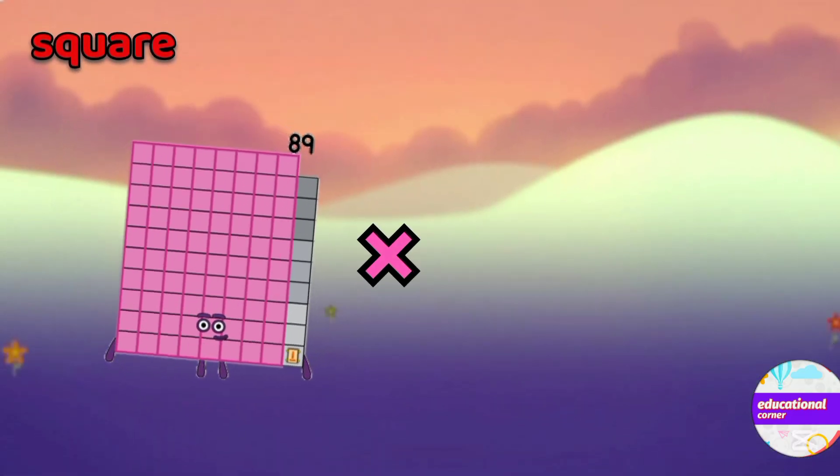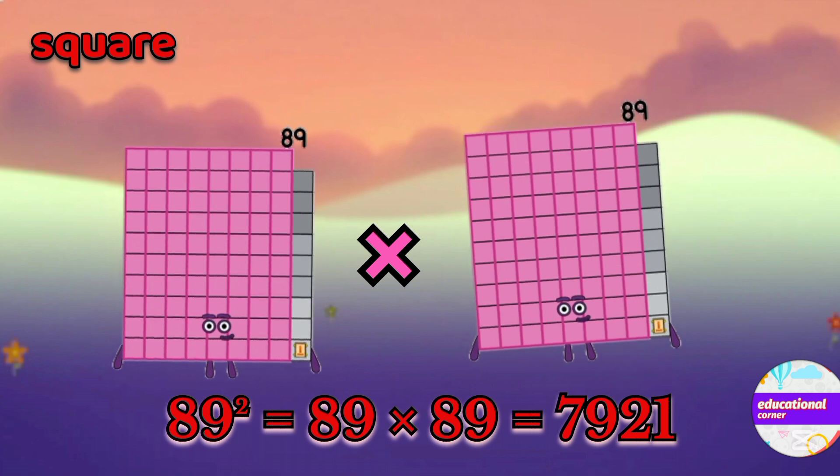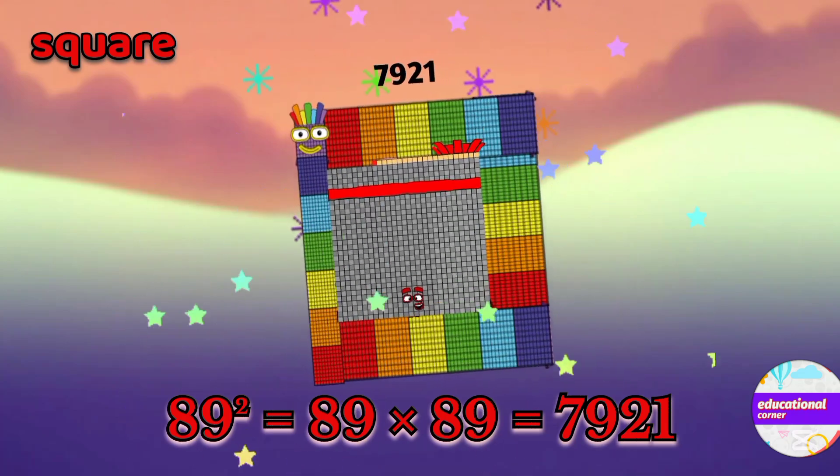89 multiply by 89. So the square of 89 is 7921.